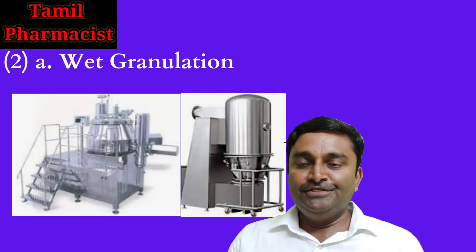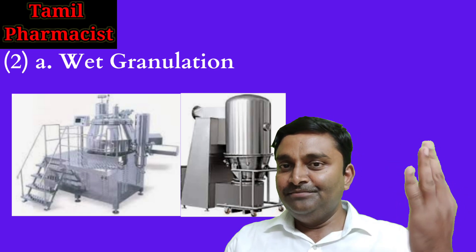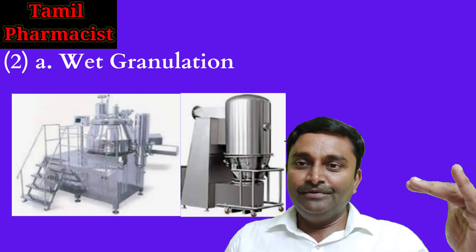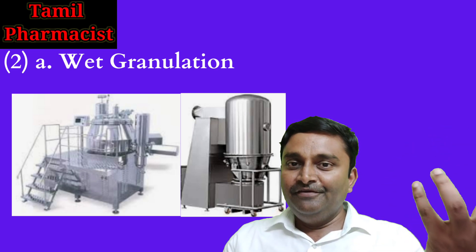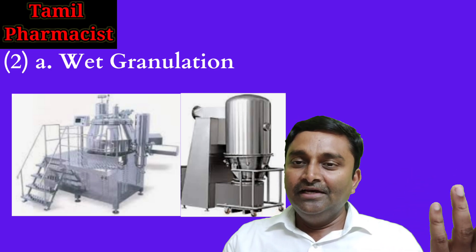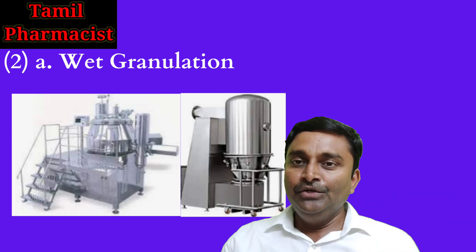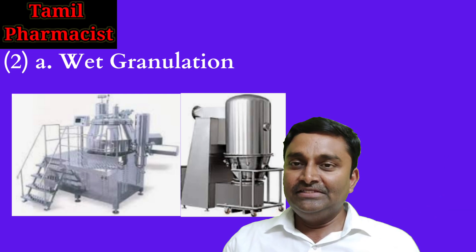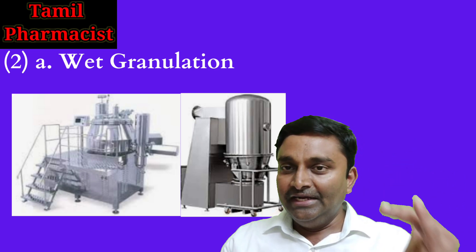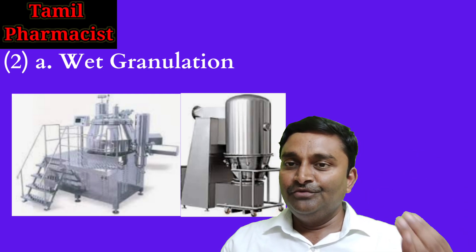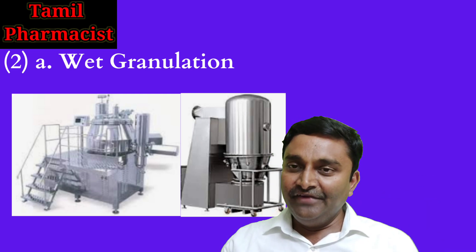In the wet granulation process, we start with sizing of the API and excipients in the proper composition. Then we proceed to granulation, followed by drying. When we dry the wet granules, we get better-formed granules. Then the granules are lubricated and finally compressed into tablets.